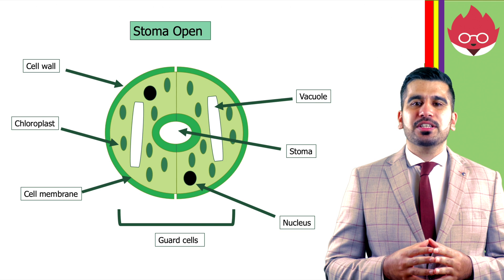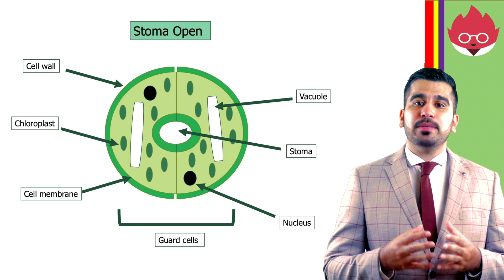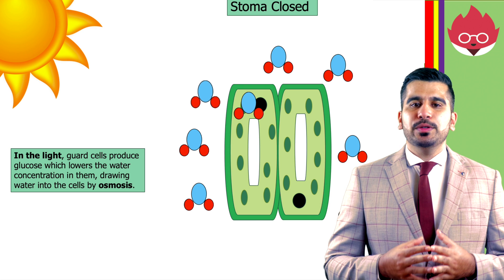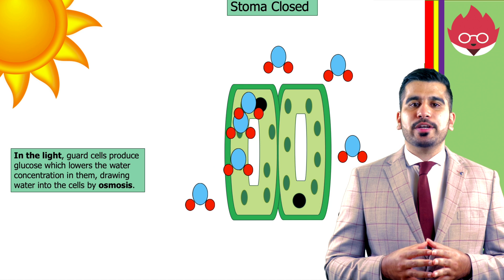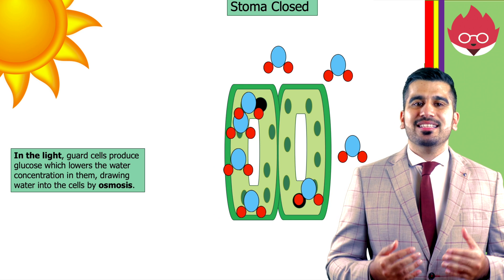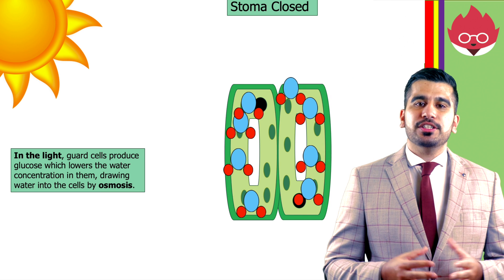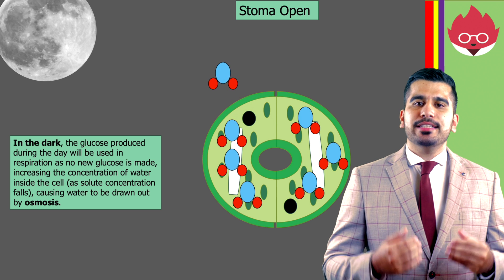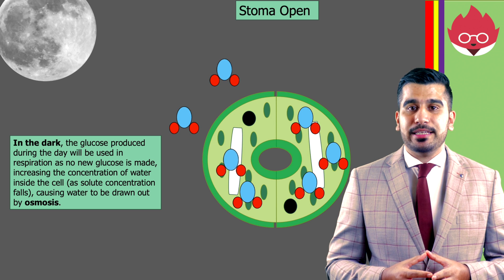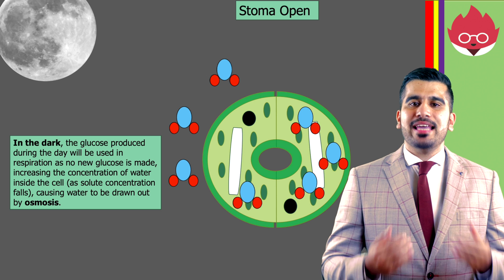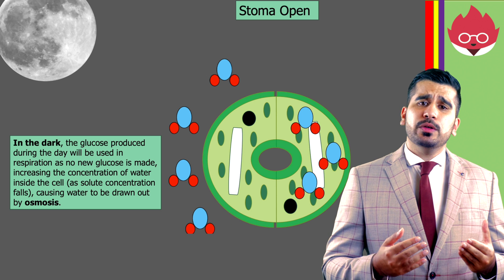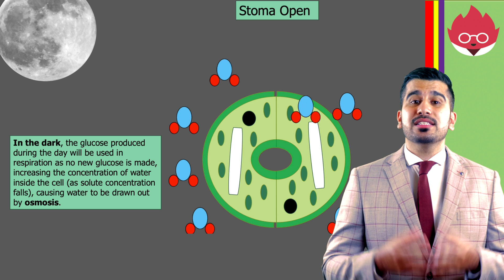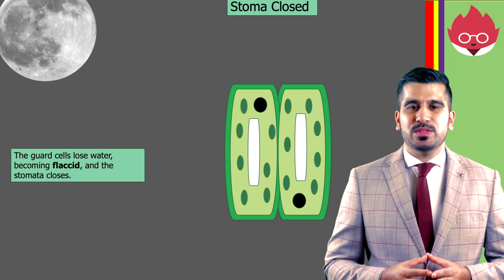For question 3: the stomata control gas exchange in the leaf. Each stomata can be opened or closed depending on how turgid its guard cells are. In the light, the cells produce glucose, which lowers the water concentration in them, drawing water into the cells by osmosis. The guard cells become turgid and the stomata open. In the dark, the glucose produced during the day will be used in respiration as no new glucose is made, increasing the concentration of water inside the cell, because the solute concentration is falling. This results in water being drawn out by osmosis. The guard cells lose water, becoming flaccid, and the stomata closes.